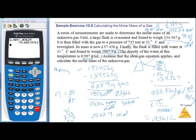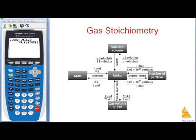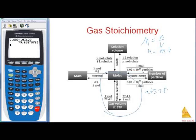Now we'll do gas stoichiometry. Remember: we can go from mass to moles using molar mass, from moles to particles using Avogadro's number (6.02 × 10²³), and moles to molarity. At STP, we use molar volume: 22.4 liters = 1 mole of any gas. If not at STP, use V = nRT/P.